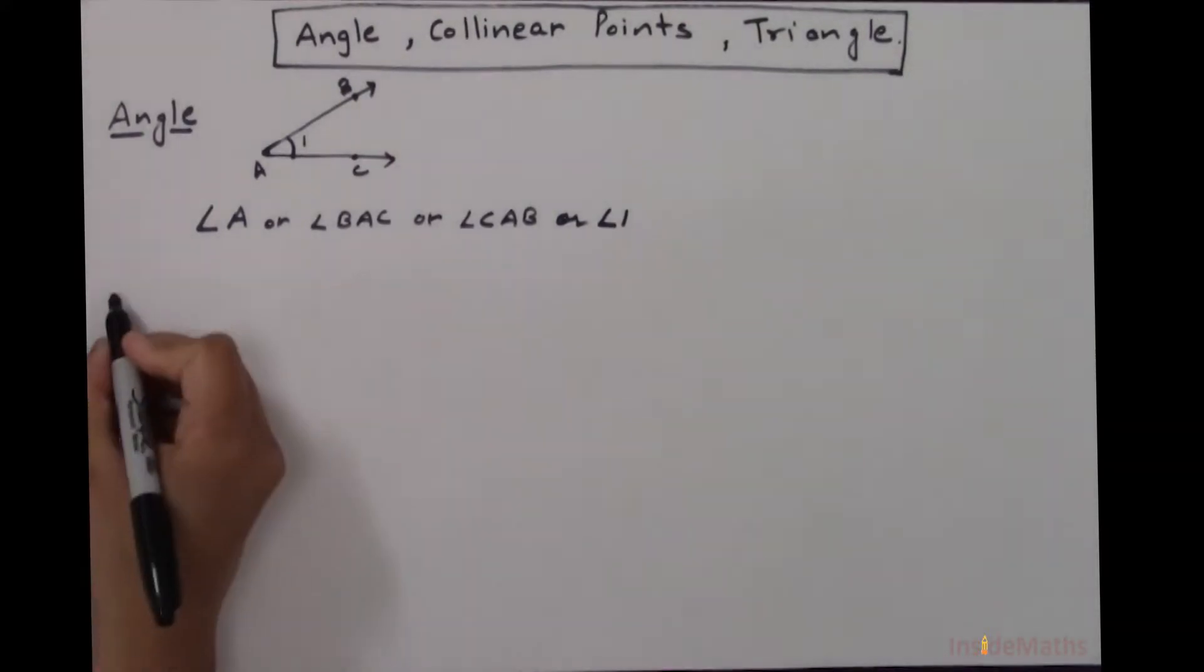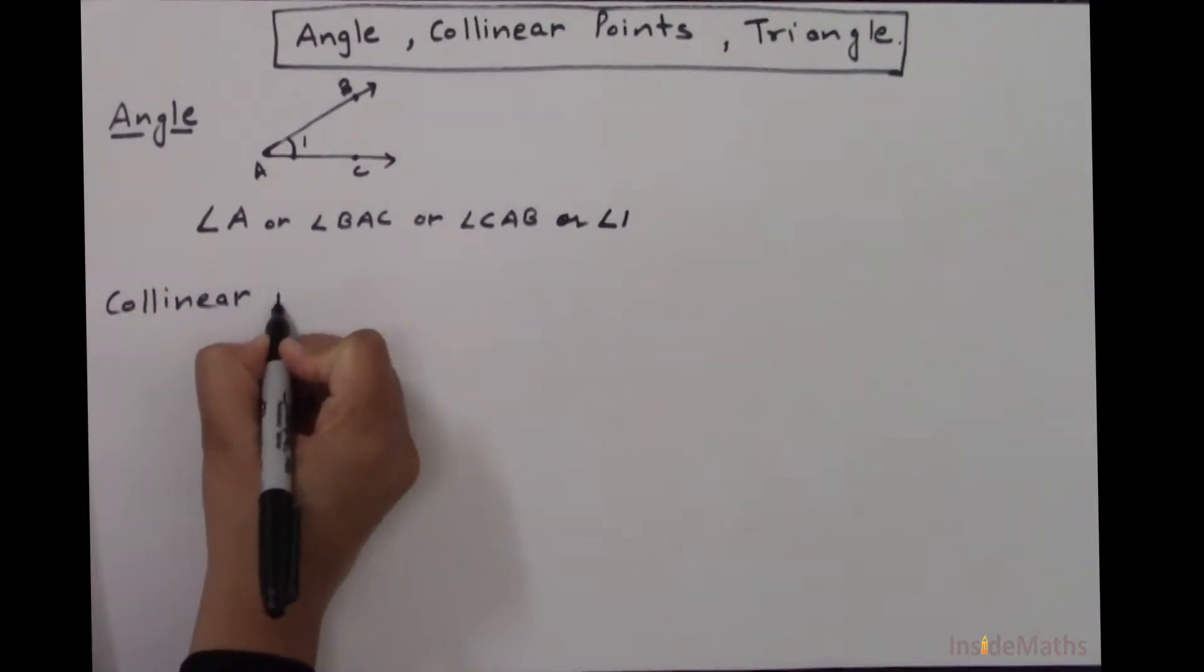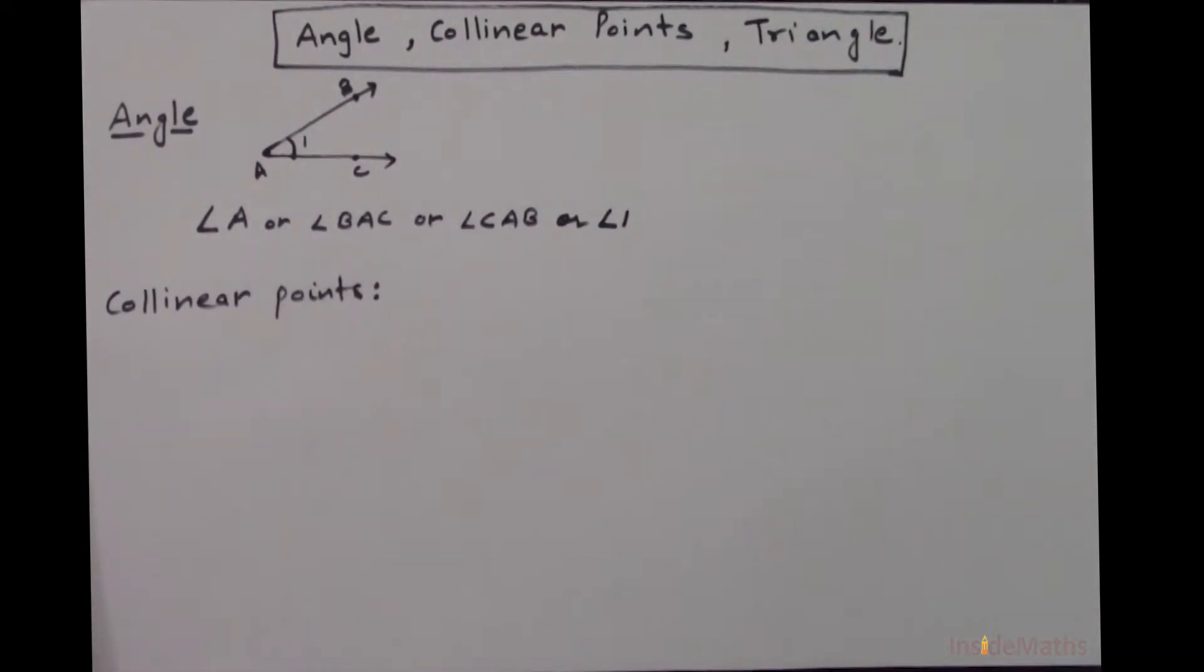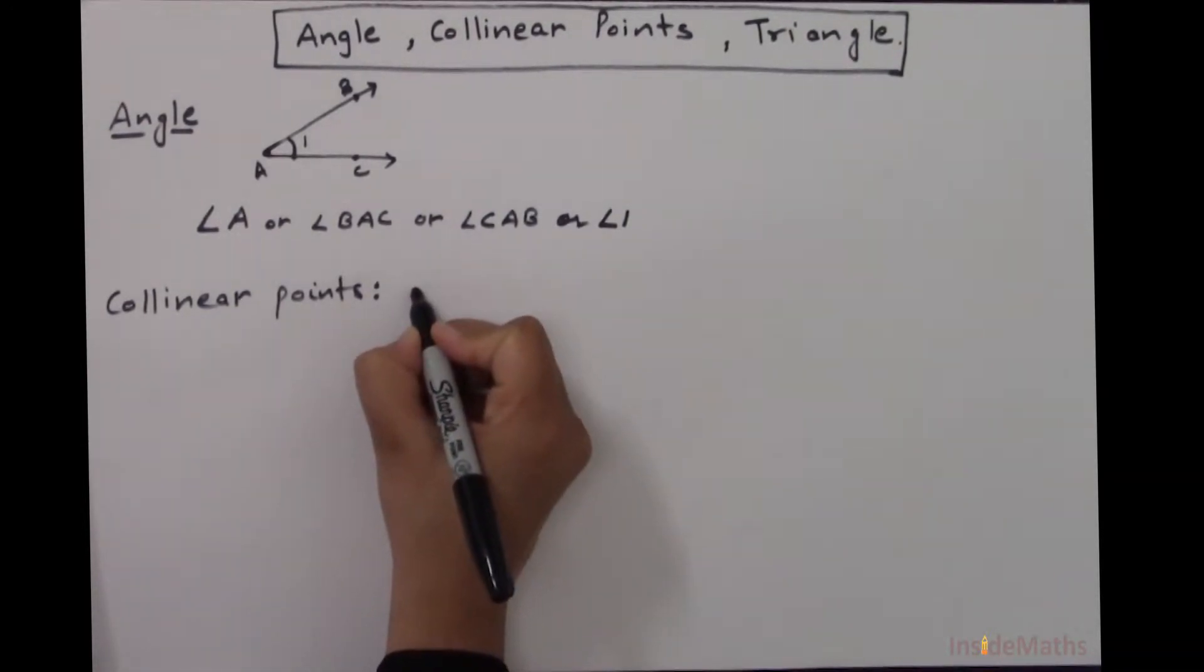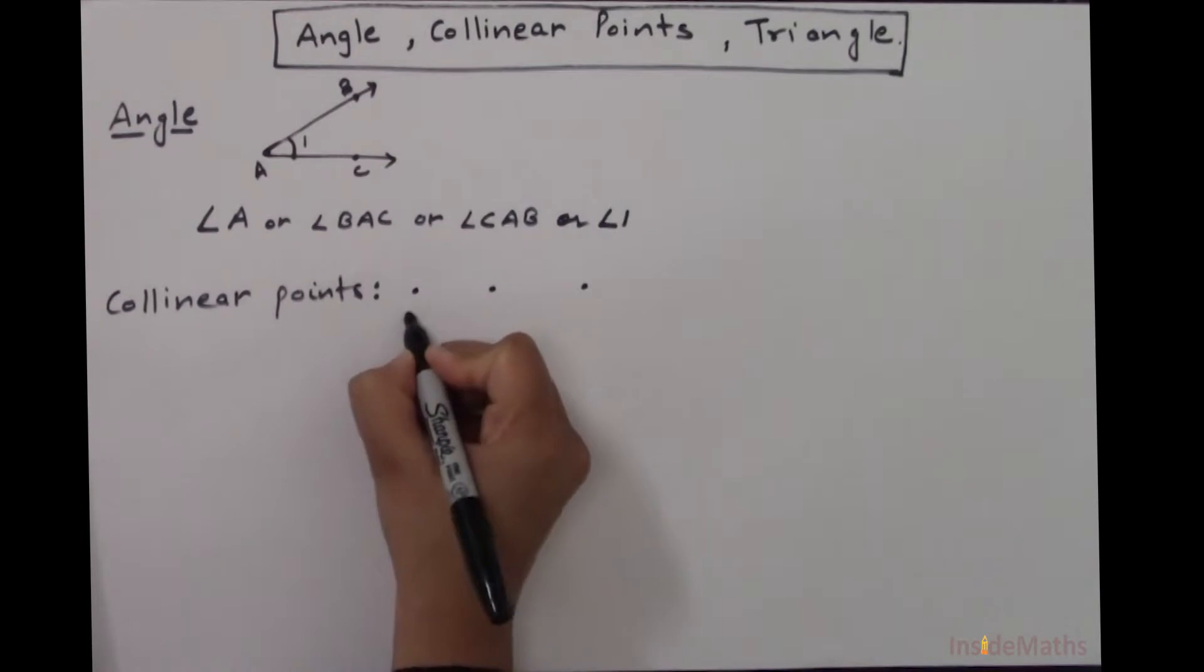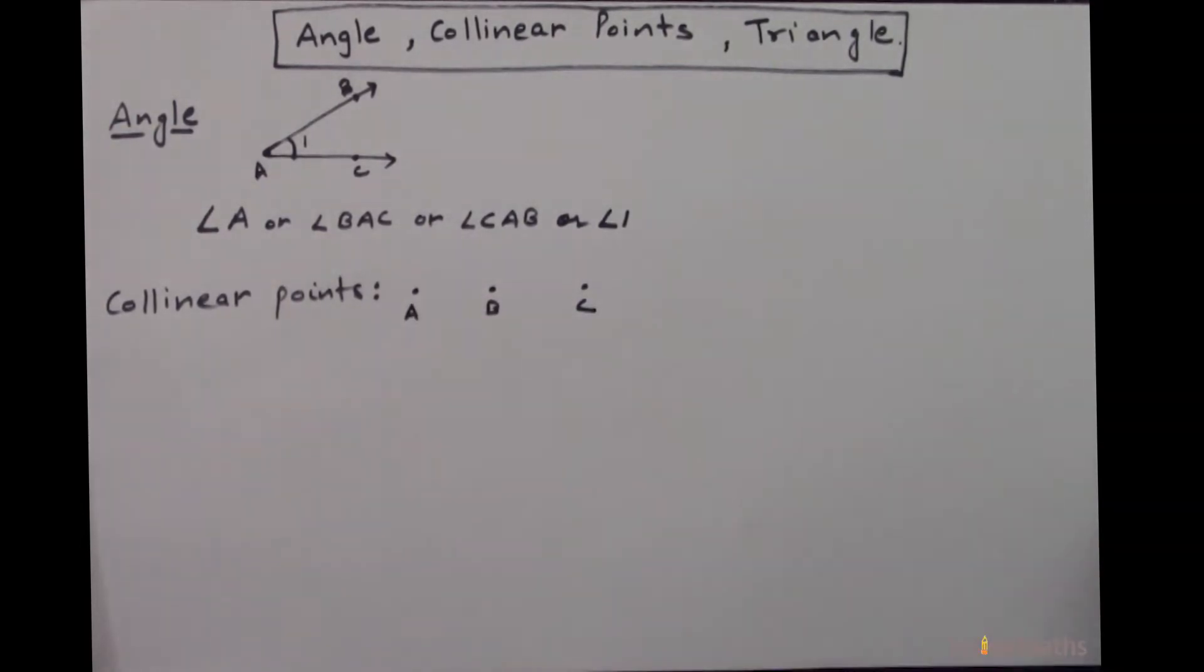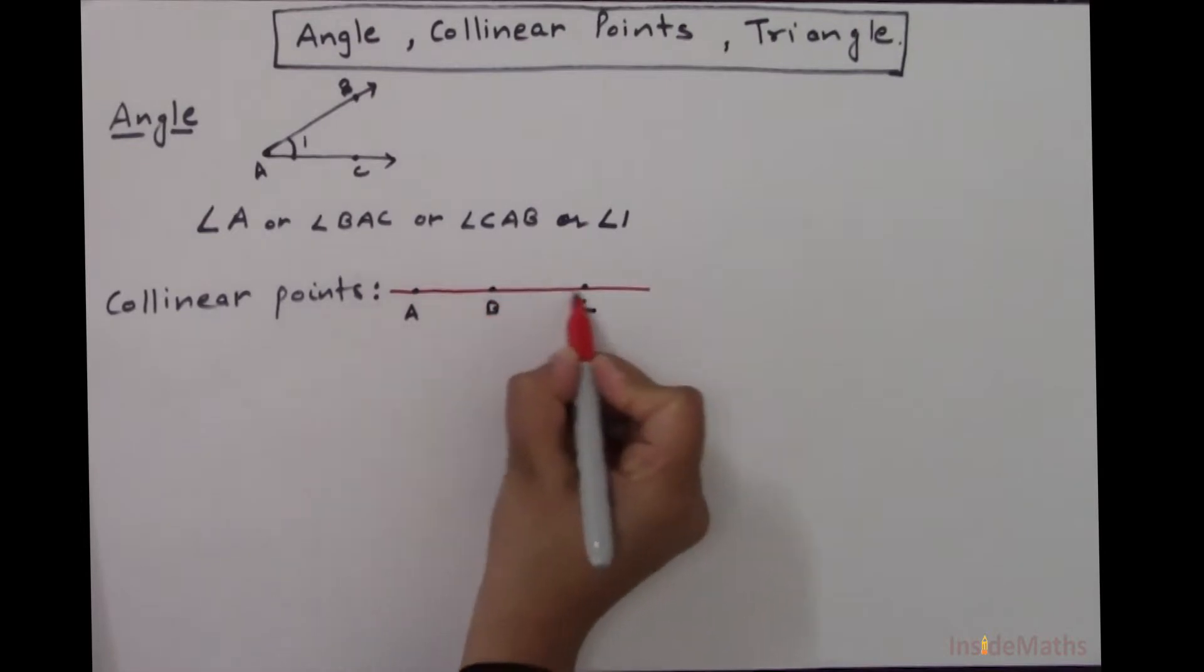Now next is collinear points. If I take some points, let's say these are three points A, B, C, and if I can draw a line which is touching all these three points, then three points are collinear points.